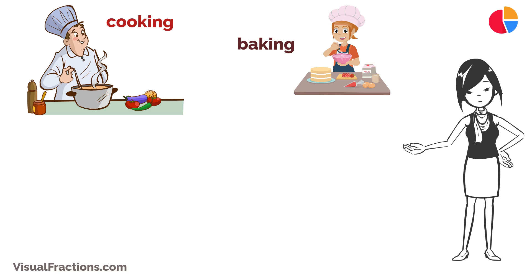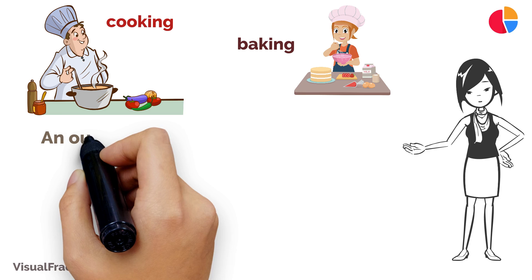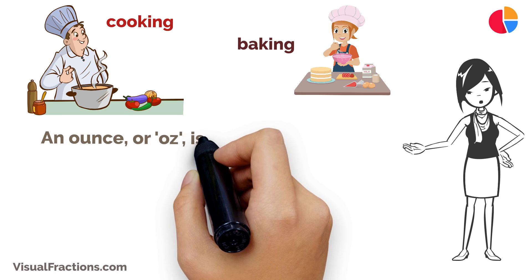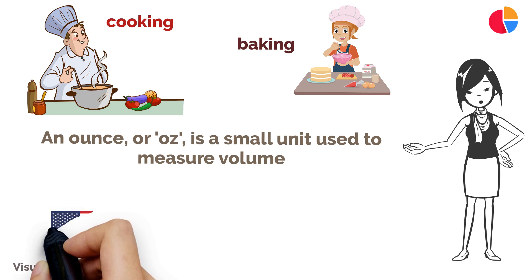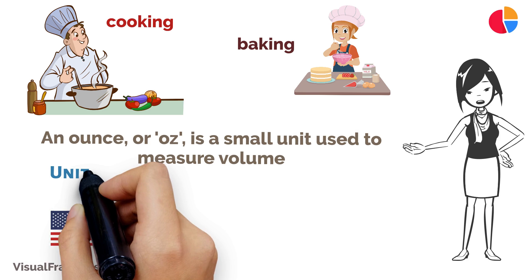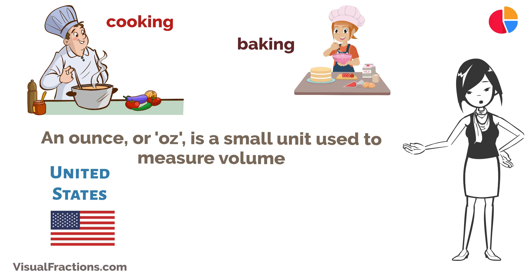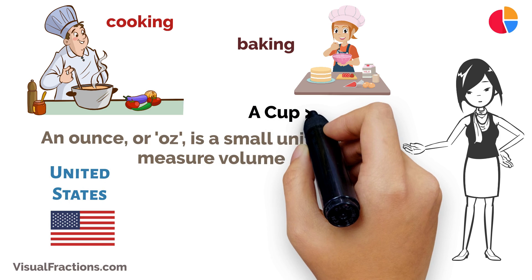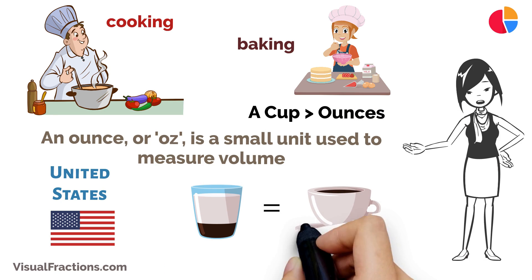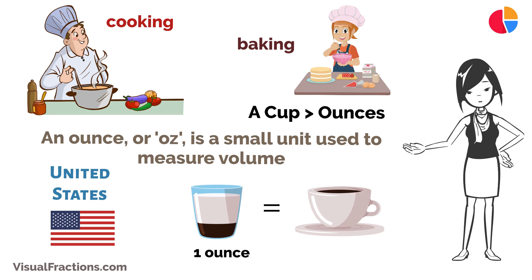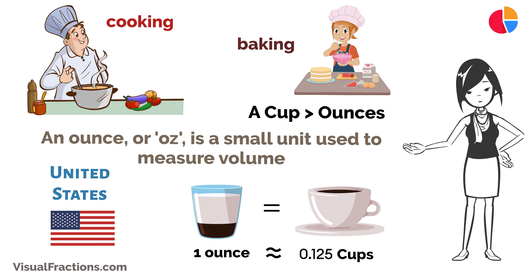An ounce, or oz, is a small unit used to measure volume, especially in the United States. A cup is another volume measurement used in cooking, and it's bigger than an ounce. Here's the main thing to remember: one ounce equals 0.125 cups.